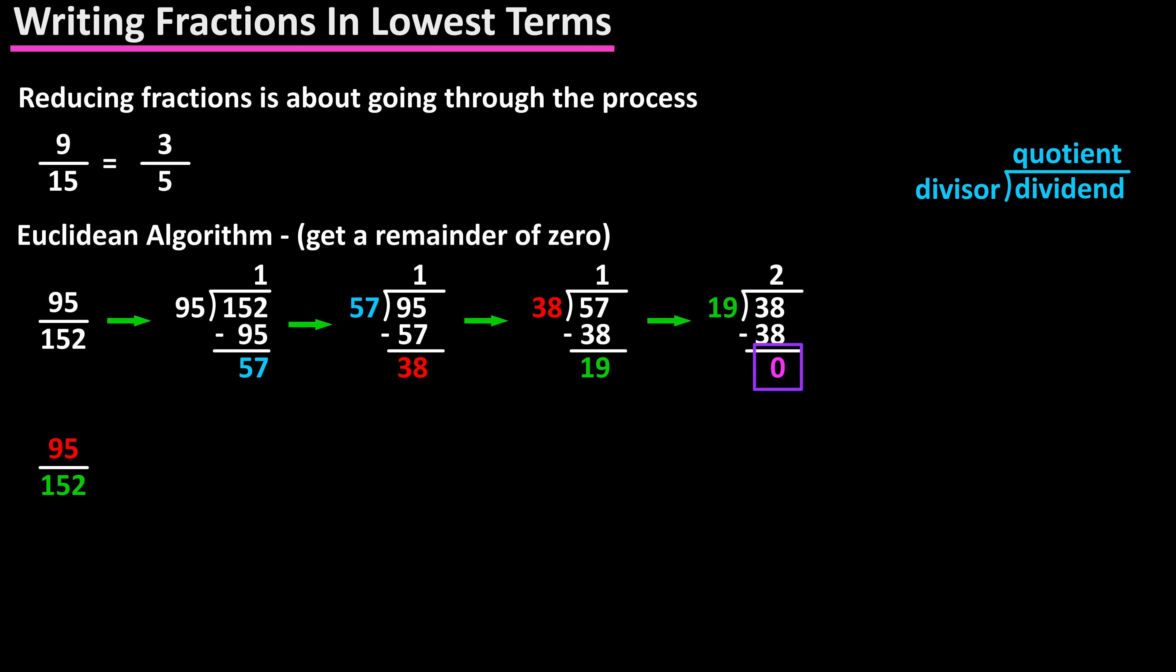So back to the original 95 over 152: 95 divided by 19 equals 5, and 152 divided by 19 equals 8. So the fraction has been reduced to its lowest terms by using the greatest common factor of 19.